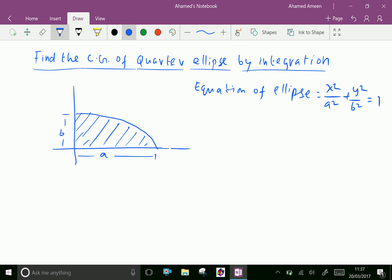Where a is semi-major axis and b is semi-minor axis. Now, let us take a small strip of width dx and length y.